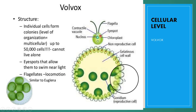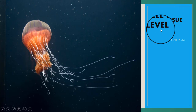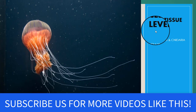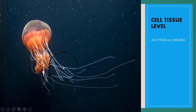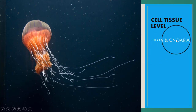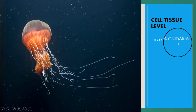The third level is cell tissue level. An aggregation of similar cells into definite patterns or layers results in the formation of tissue. Jellyfish and some cnidarians are examples of cell tissue level organization. Another best example is the nerve net in cnidarians, where nerve cells and their processes form a definite tissue structure with the function of coordination.